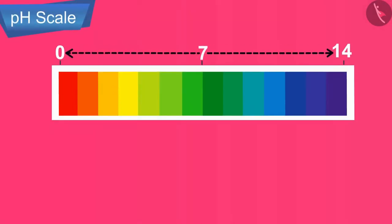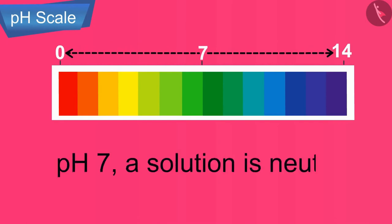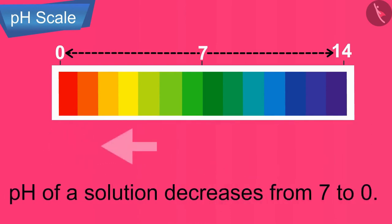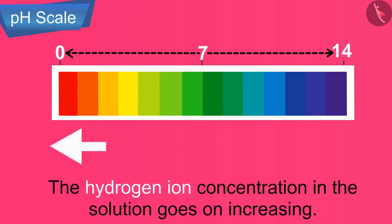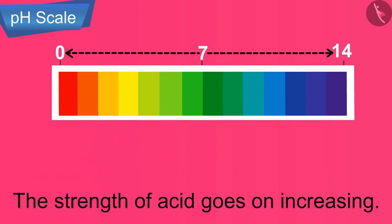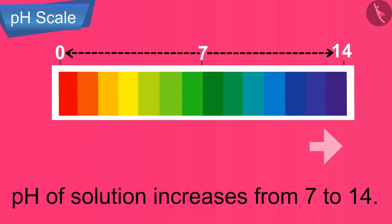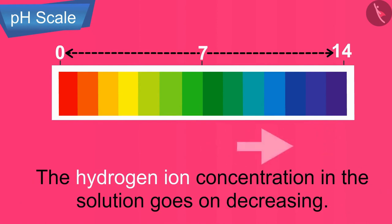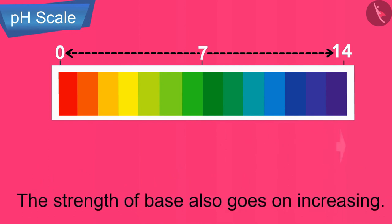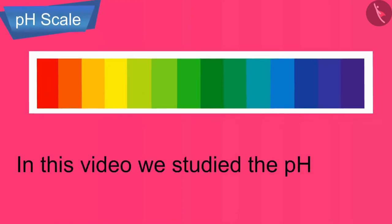We can conclude that at pH 7, a solution is neutral. As the pH of a solution decreases from 7 to 0, the hydrogen ion concentration goes on increasing, and hence the strength of the acid goes on increasing. On the other hand, as the pH increases from 7 to 14, the hydrogen ion concentration goes on decreasing, due to which the strength of the base goes on increasing. In this video, we studied the pH scale. In the next video, we will study about salts.